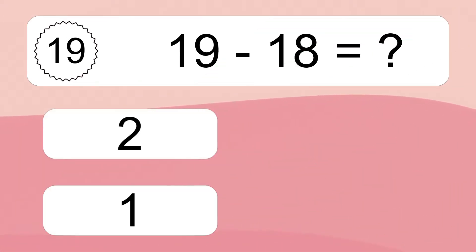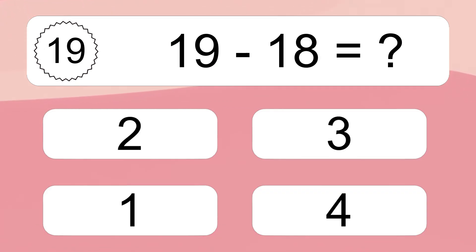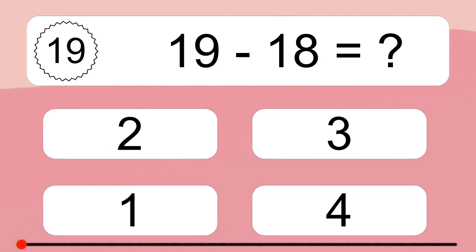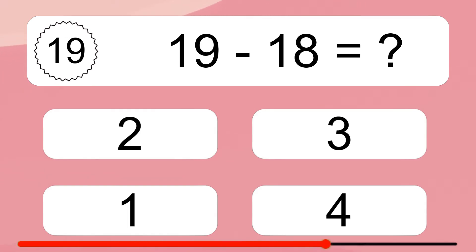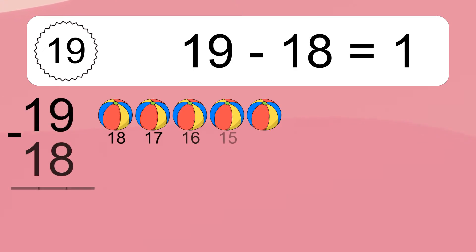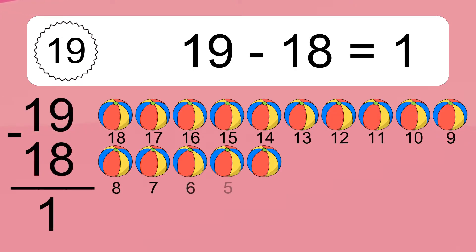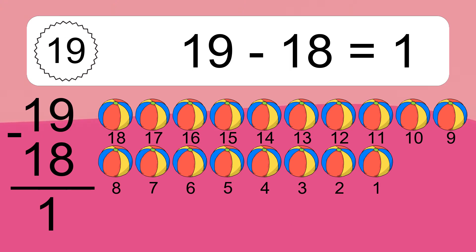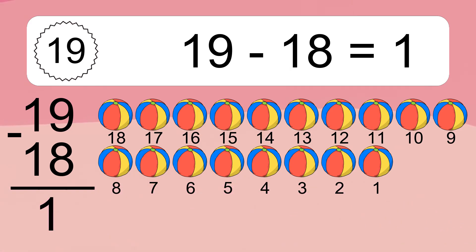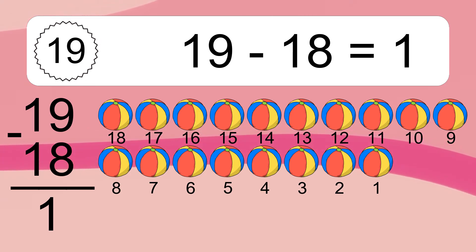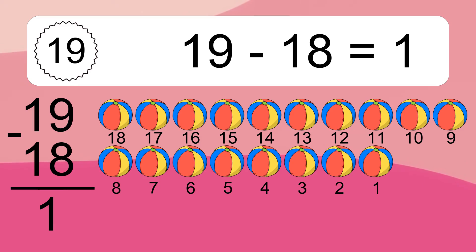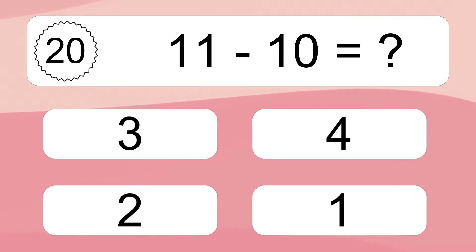19 minus 18 equals what? 19 minus 18 equals 1. Let's count it: 18, 17, 16, 15, 14, 13, 12, 11, 10, 9, 8, 7, 6, 5, 4, 3, 2, 1.